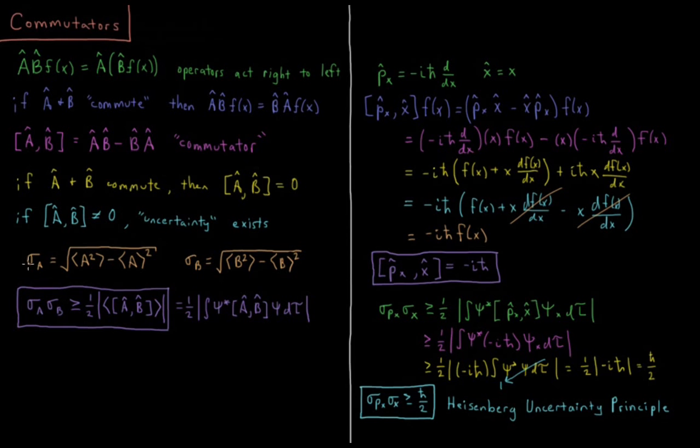So we've shown in previous videos that the uncertainty of a given operator, the standard deviation for what you're going to measure its value to be when you take a measurement, is going to be the square root of the expectation value of that operator squared, minus the square of the expectation value of that operator. Notice here, the square is on the inside, so this happens inside the integral, and here we take the integral first and then square the result.